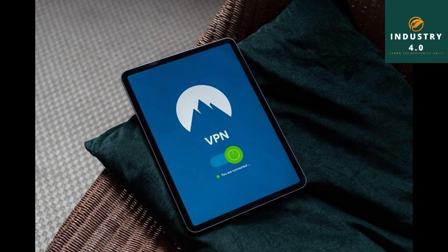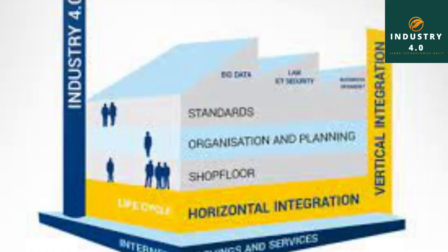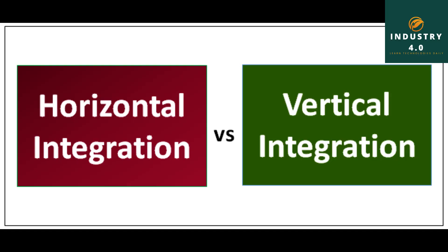Horizontal and Vertical System Integration: Vertically integrated groups' objective is to hold as plenty of their fee chain in-house. Horizontally incorporated groups are seeking to construct out their fee chain via constructing partnerships outdoor their organizations. In Industry 4.0, horizontal and vertical integration allows interconnection for the duration of whole organizations. Through incorporated record structures, there may be no disconnect among departments or suppliers.